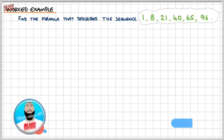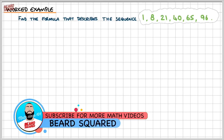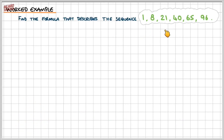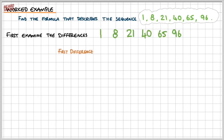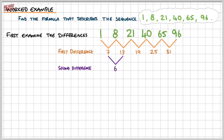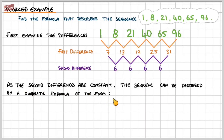So let's look at a worked example where we can examine the differences and find the formula for ourselves. The question is: find the formula that describes the sequence 1, 8, 21, 40, 65, and 96. We're going to first examine the differences. The first difference between 1 and 8 is 7; between 8 and 21 is 13; between 21 and 40 is 19; between 40 and 65 is 25; and between the last two numbers is 31. The second differences are all 6 — constant. So as the second differences are constant, the sequence can be described by the quadratic formula un equals an squared plus bn plus c.